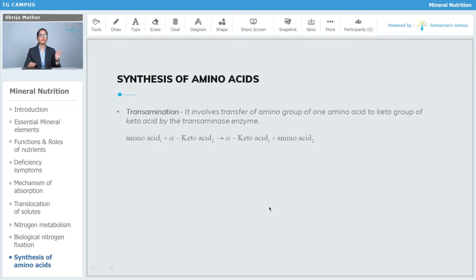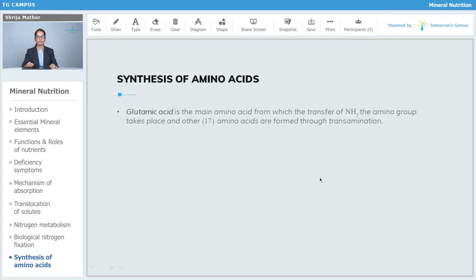Glutamic acid is the main amino acid from which the transfer of the NH2 amino group takes place, and other 17 amino acids are formed through transamination.